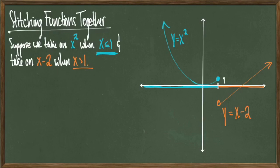Since for y equals x squared I'm allowing x to be equal to one, I'll draw a closed, filled-in circle on the portion of the graph that didn't get erased, and I'll draw an open circle on y equals x minus two, because there x is supposed to be strictly greater than one, but not equal to one. So again, all I've said is that on portions of the number line I consider one function but not the other, so I erase the half of the graph that isn't considered on that part of the x-axis.